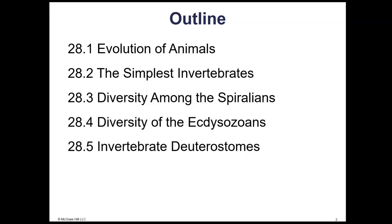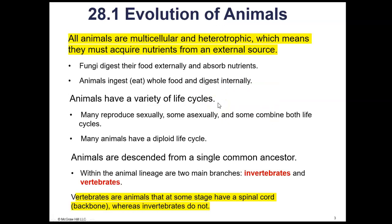Ecdysozoans are going to include the nematodes and the arthropods. And then the deuterostome invertebrates are going to be the echinoderms, which includes sea stars. Echinoderm means spiny skin. There will be a larger number of different types of animals in the Spiralians. But let's get started first with making sure that you know the characteristics or traits that all animals share.